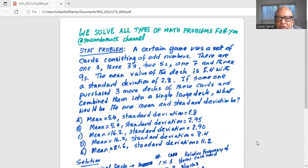A certain game uses a set of cards consisting of odd numbers. There are one 1, three 3s, two 5s, one 7, and three 9s. The mean value of the deck is 5.4 with a standard deviation of 2.8.